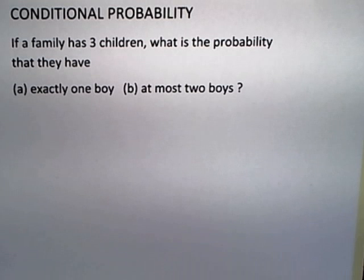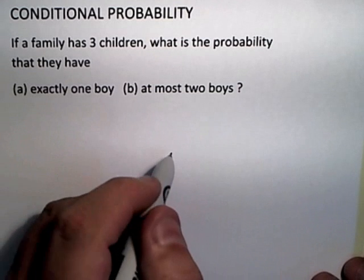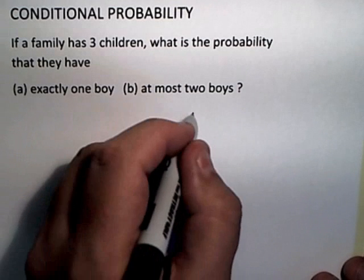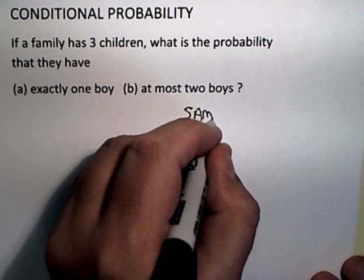For either case, I need to lay out the sample space. I'm assuming the probability of having a boy versus a girl is each one-half. In reality it's very close to that. We'll always assume the probability of boys is one-half and probability of girls is one-half, which makes these equally likely sample spaces. The first thing I want to do is lay out what the sample space looks like for this problem.